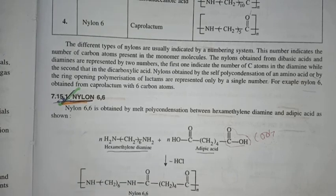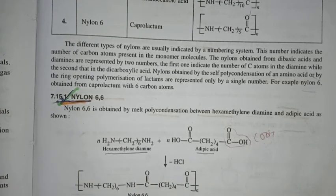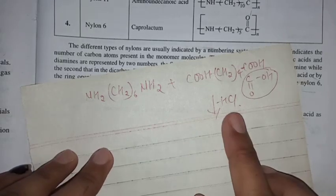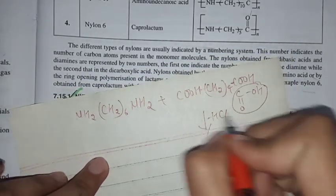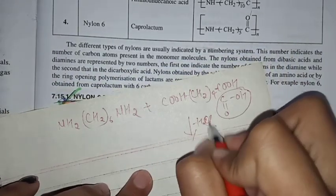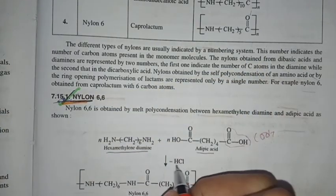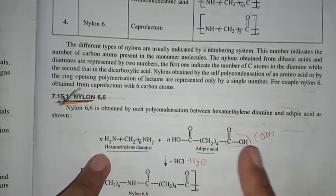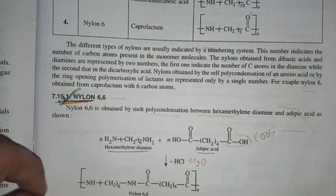So what do we have to do is polymerization. NH2-CH2-6-NH2 plus COOH-CH2-4-COOH. We have to remove H2O. This will be not HCl, it's not HCl. We have to remove water.